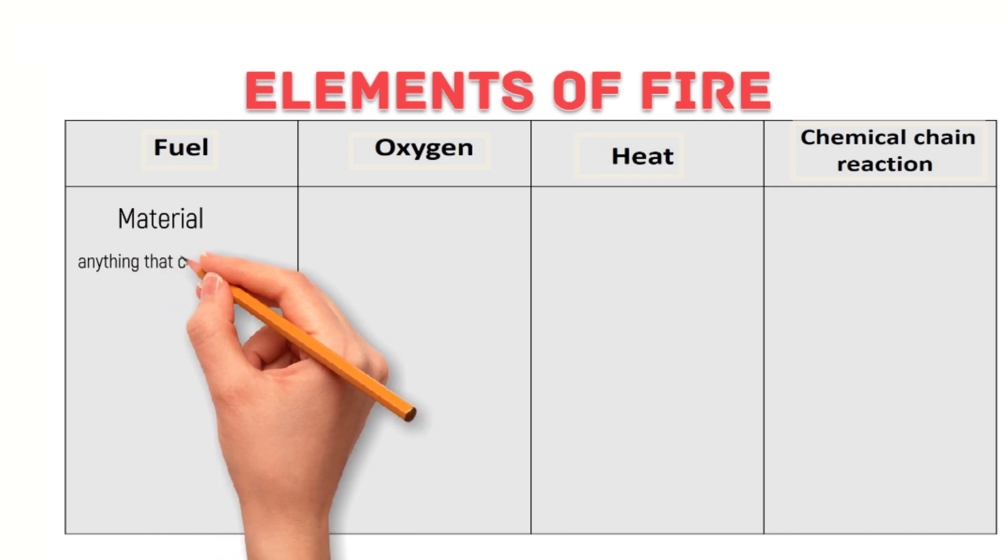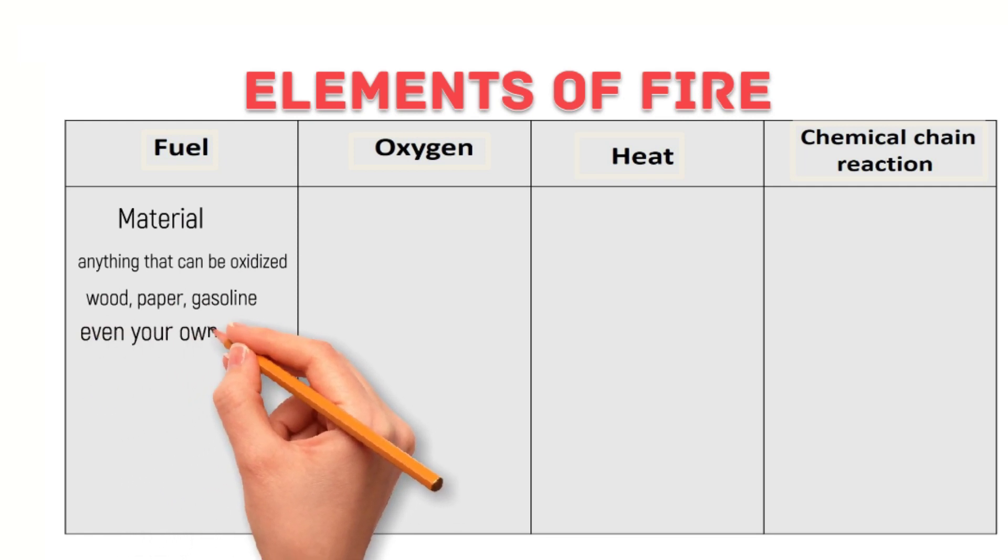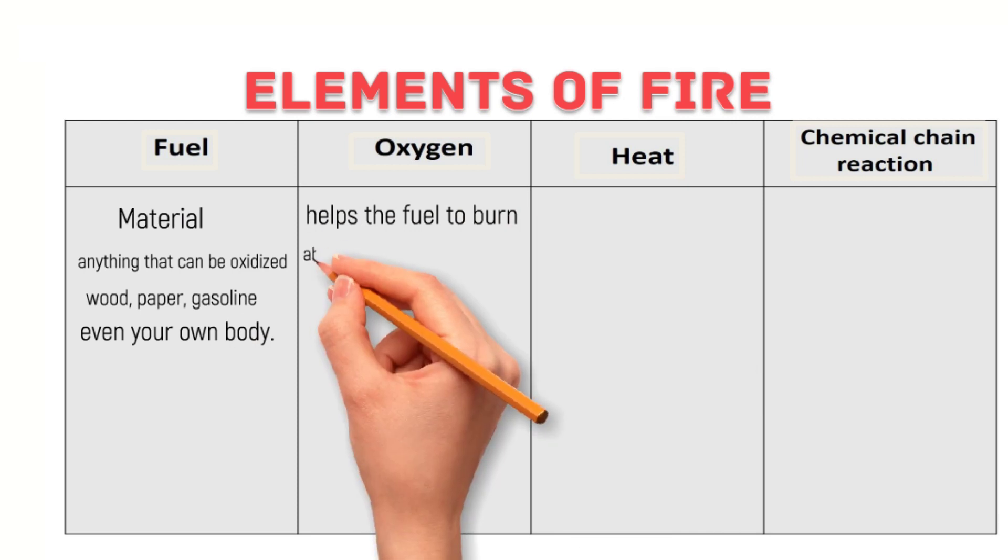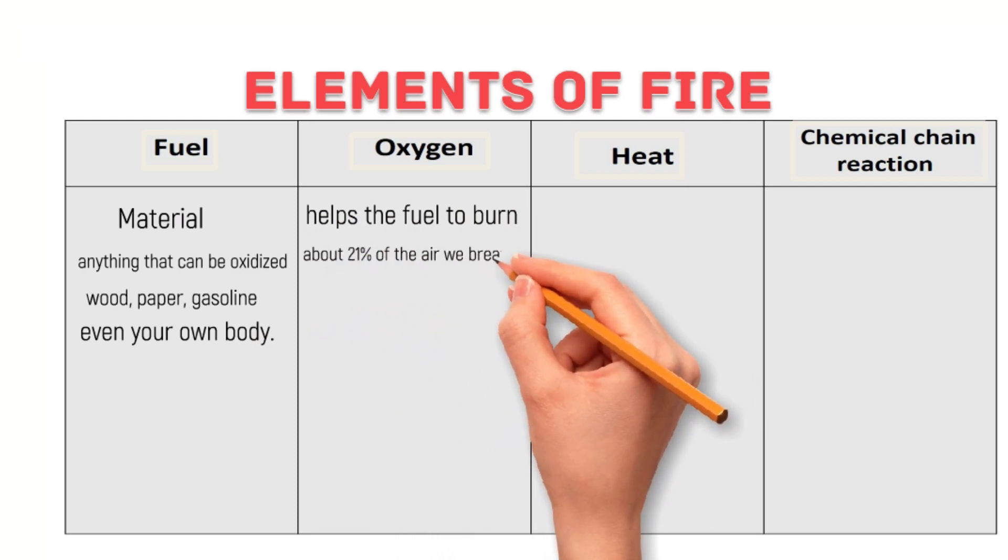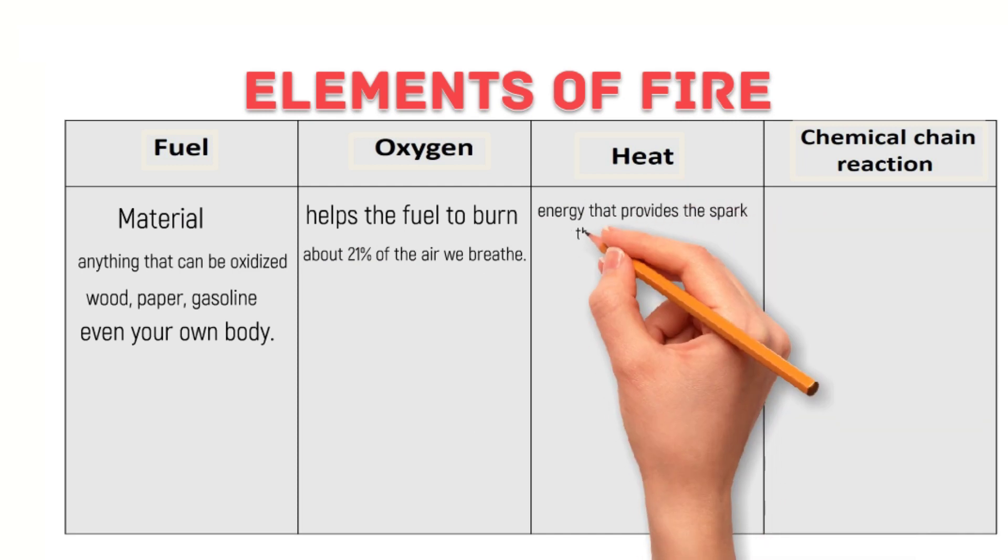Fuel is the material that burns. It can be anything that can be oxidized, such as wood, paper, gasoline, or even your own body. Oxygen is the gas that helps the fuel to burn and makes up about 21% of the air we breathe. Heat is the energy that provides the spark that ignites the fuel and starts the fire. It can come from a variety of sources, such as a match, a lighter, or a spark from a lightning strike.